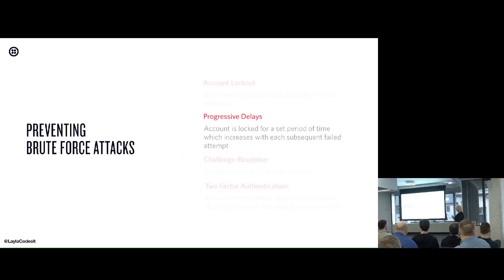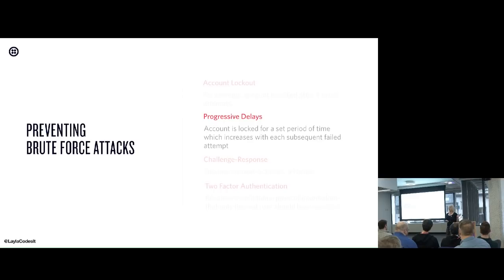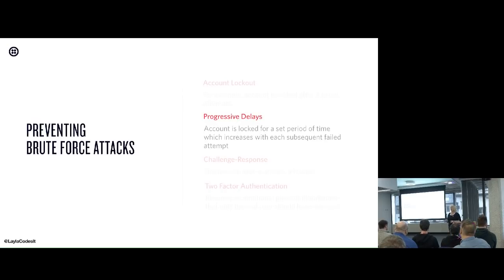That goes on to progressive delays. The first time you give an incorrect password, you're locked out for, say, a minute. The second time, five minutes. The third time, an hour. And then maybe you're locked out entirely. This is good if you have a whole network of attacks - usually when they do a brute force attack they'll do it really quickly, so they can't keep trying because they're effectively locked out for 30 seconds. So this is really good for preventing automated attacks, though it is a little harder to implement.